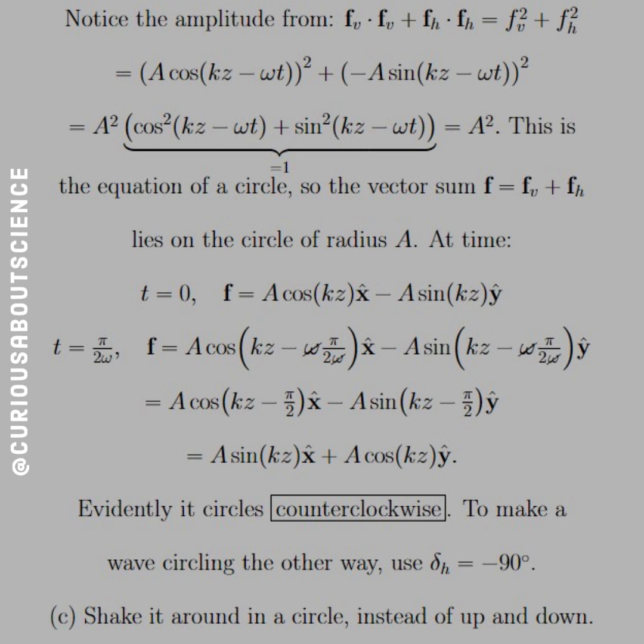Whoa, look at that. Pythagorean theorem comes in now, or the Pythagorean identity, rather. And that equals 1. So you're saying that the F of V squared plus F of H squared equals A squared? Well, this is the equation of a circle. Who would have thought?